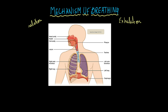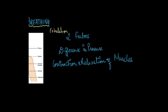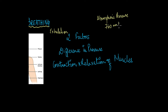For breathing to occur there are two main factors involved. One is the difference in pressure. We know that the air molecules in the atmosphere exert a pressure known as the atmospheric pressure, and usually the value of atmospheric pressure is 760 mmHg. Like that, there is pressure inside the lungs as well, known as the intrapulmonary pressure.